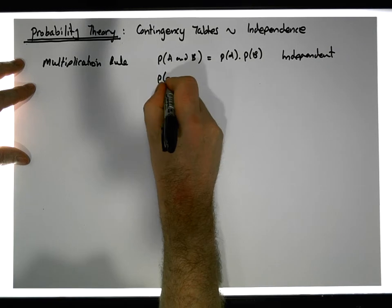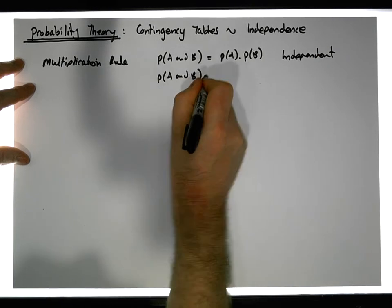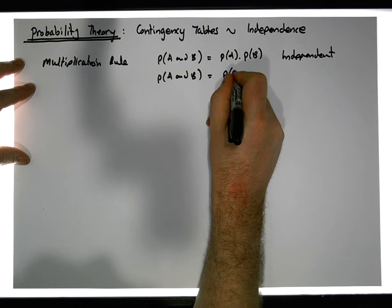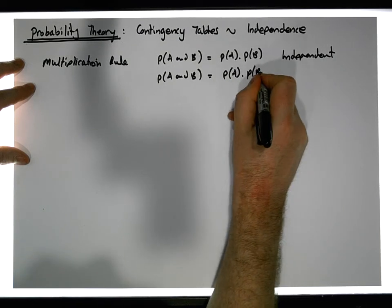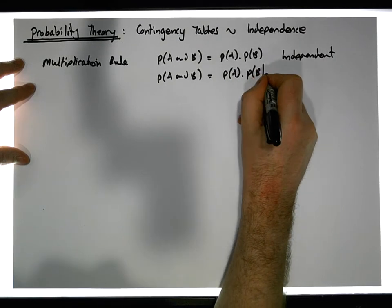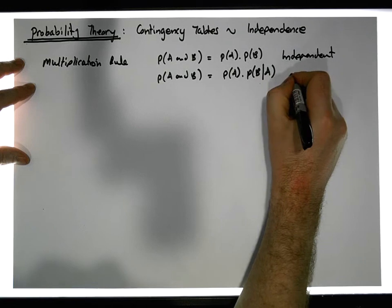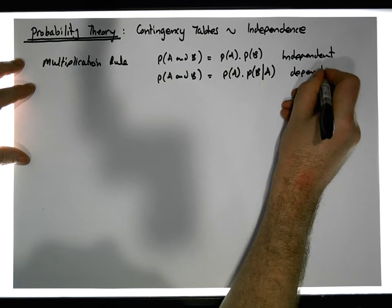Otherwise, the probability of A and B is equal to the probability of A times the probability of B given A — that is, the probability of B conditioned on knowing that A has occurred. This situation is when the events are dependent on each other.